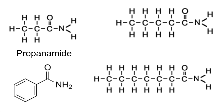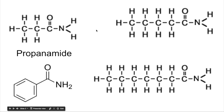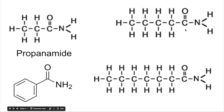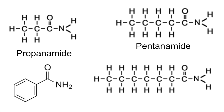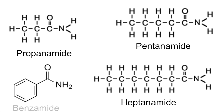Have a go at naming the other three. This one has one, two, three, four, five carbons — as a carboxylic acid it would be pentanoic acid, so it's called pentanamide. The next one has seven carbons in the chain, so that would be heptanoic acid, making it heptanamide. The last one: if that NH₂ group were a hydrogen it would be benzoic acid, so we call this one benzamide.